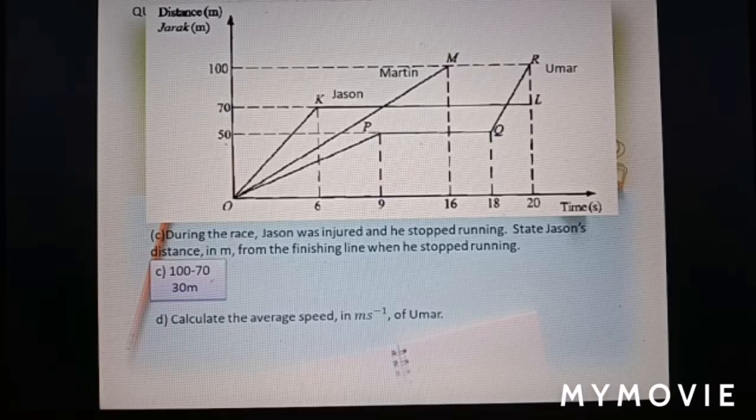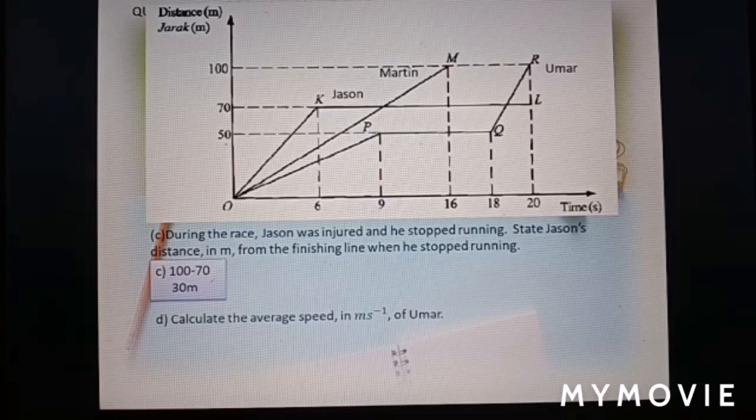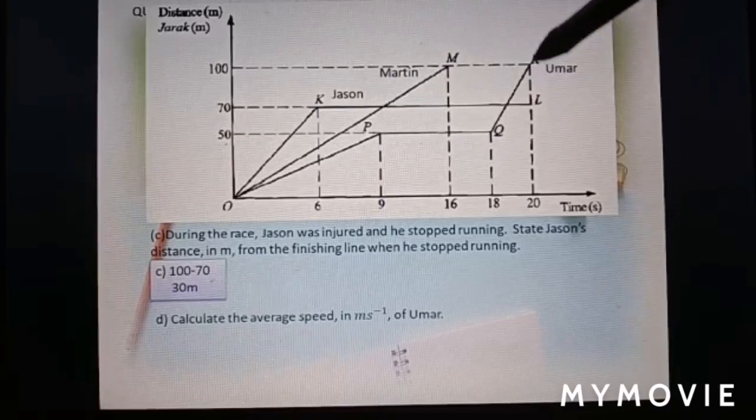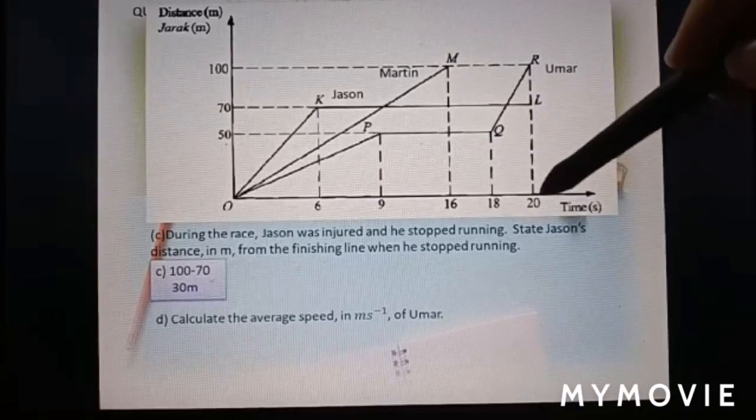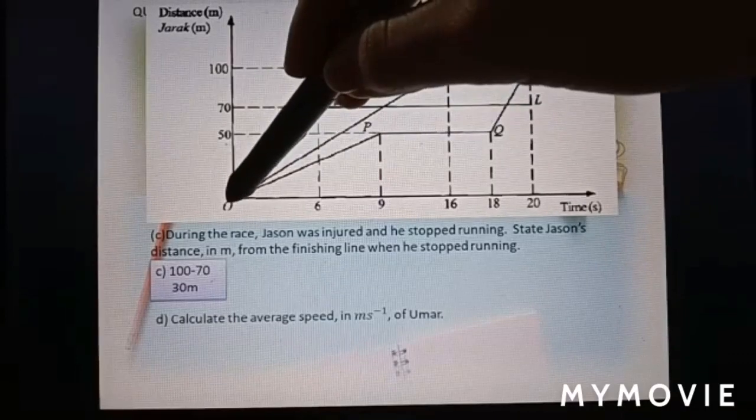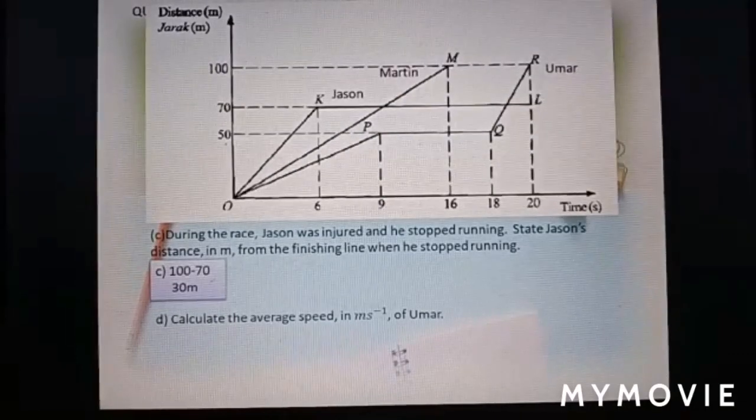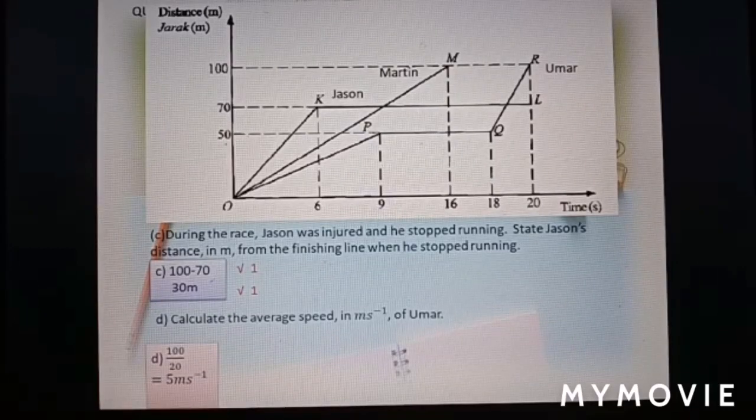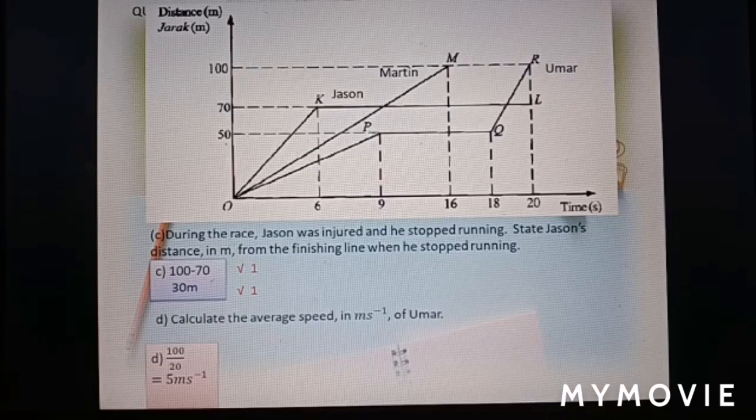Part D. Calculate the average speed in meter per second of Umar. Average speed means total distance over total time. So, total distance is 100 meter. Total second is 20 second. Include, he rests here. So, duration is from here to here. 100 over 20 equal to 5 meter per second.